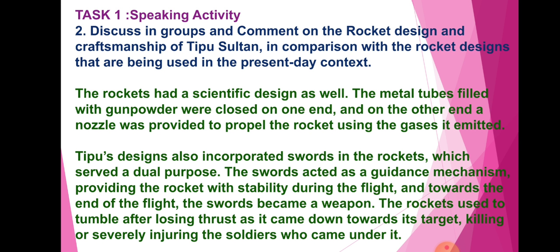The rocket had a scientific design. The metal tube filled with gunpowder was closed on one end, and on the other end a nozzle was provided to propel the rocket using the gases it emitted. Tipu Sultan also incorporated a sword in the rocket which served a dual purpose. The sword acted as a guidance mechanism providing the rocket with stability during flight, and towards the end of the flight the sword became a weapon. Rockets used to tumble after losing thrust as they came down towards their target, killing or seriously injuring soldiers who came under them.